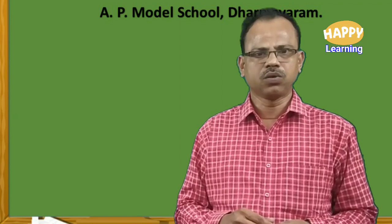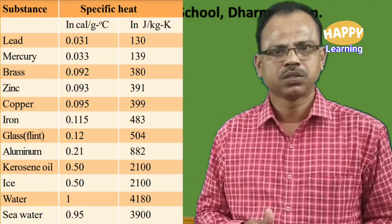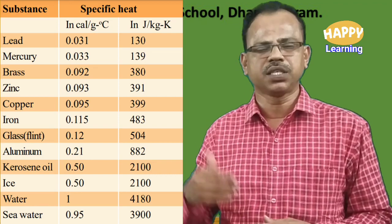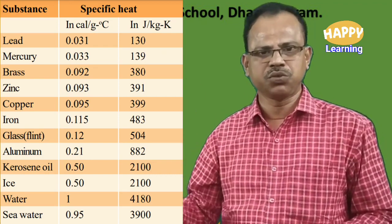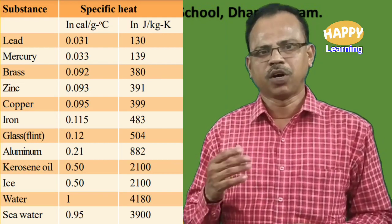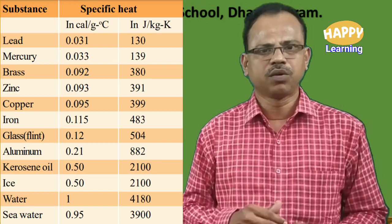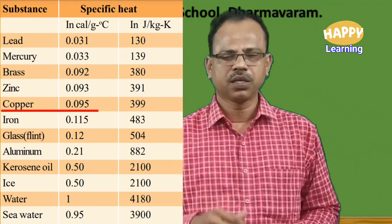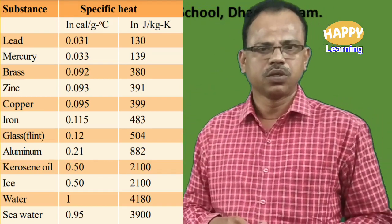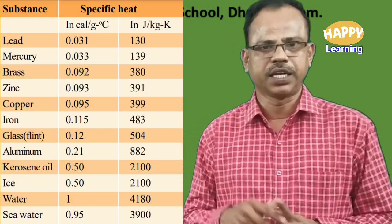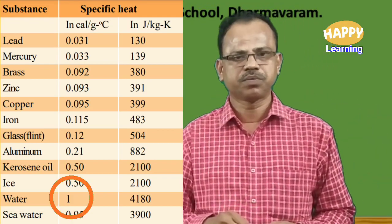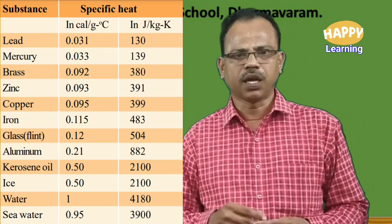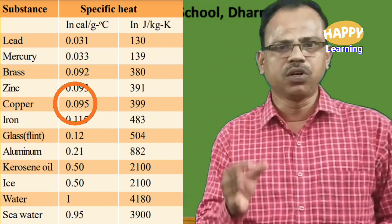Now observe this table given in your textbook. The specific heats are listed for various materials both in CGS units and SI units. Among these, let us observe three things: water, copper, and aluminum. Water has specific heat equal to 1, aluminum has specific heat equal to approximately 0.2, and specific heat of copper equals 0.1.